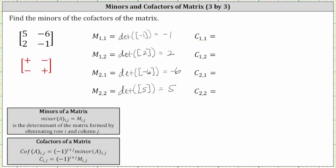Cofactor one comma one is equal to negative one raised to the power of one plus one times minor one comma one, which we already found. Negative one raised to the second power is positive one, giving us positive one times negative one. Cofactor one comma one is equal to negative one. Cofactor one comma two is equal to negative one raised to the power of one plus two times minor one comma two. The cube of negative one is negative one, and we know minor one comma two is two. Negative one times two is equal to negative two.